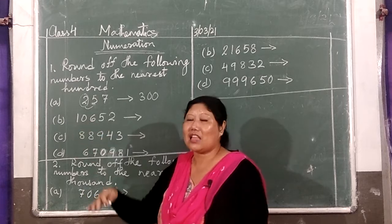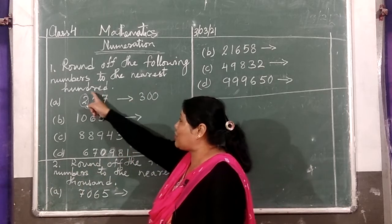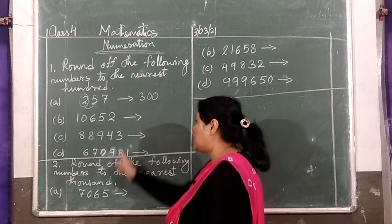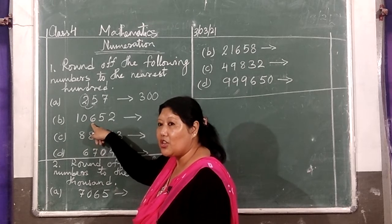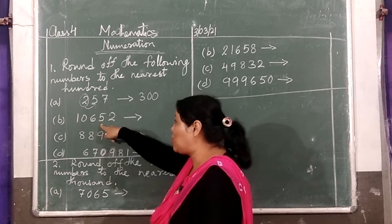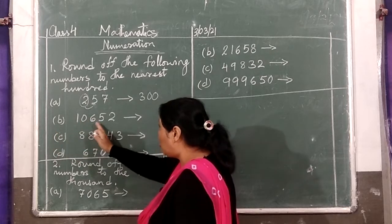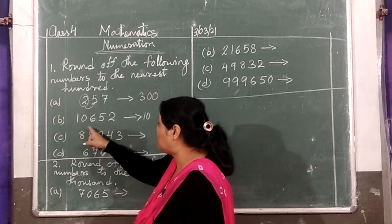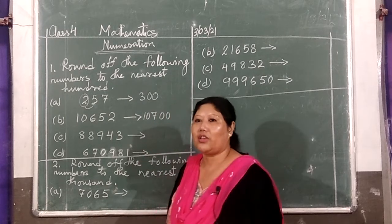Next question — it looks like 10,652. For nearest 100, you have to look at the number in the 100s space, which is 6. So is 6 going to change or not? Look — the next digit is 5, equal to 5. So this is going to change. Other numbers will remain the same, and the digits in the ones place will become 0. So the 6 becomes 7.